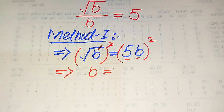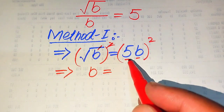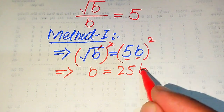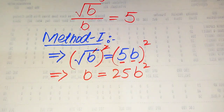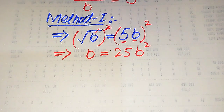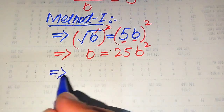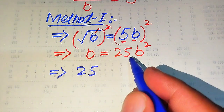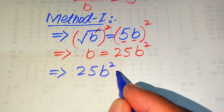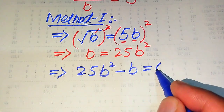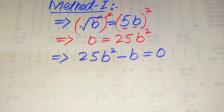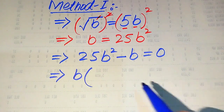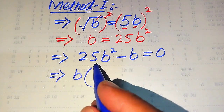After squaring both sides, the square root is eliminated and we get B equals 25B squared. We apply the square separately: the square of 5 becomes 25 and the square of B becomes B squared. In the next step, we move B to the right hand side, giving us 25B squared minus B equals 0.